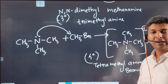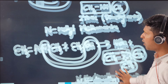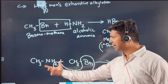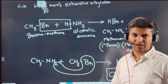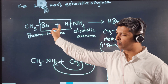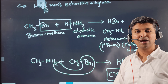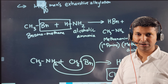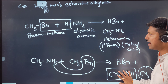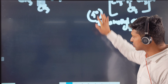That completes the first reaction — Hofmann's exhaustive alkylation for the preparation of amines. Remember, the name Hofmann's exhaustive alkylation applies from the second step onward, since the first step involves ammonia, not an amine. Now let's see why a tertiary haloalkane cannot be used.